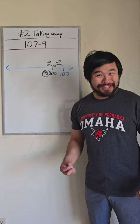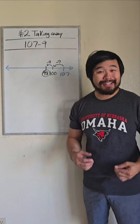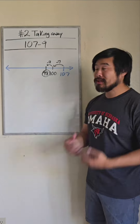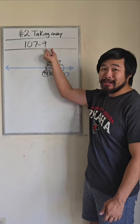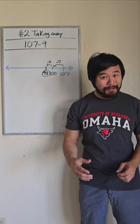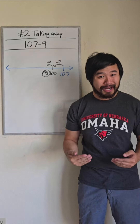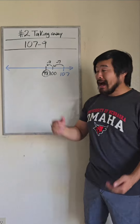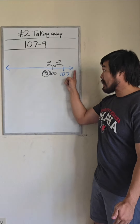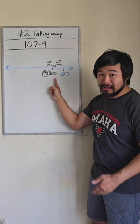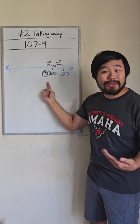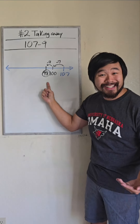Another way to think about subtraction is the idea of taking away. I personally like to do this when the second number is a lot smaller than the first number. So with the example of 107 minus 9, I don't have to take away all 9 at the same time. I could take away 7 first to land on 100, and then take away 2 from that, so the answer is 98.